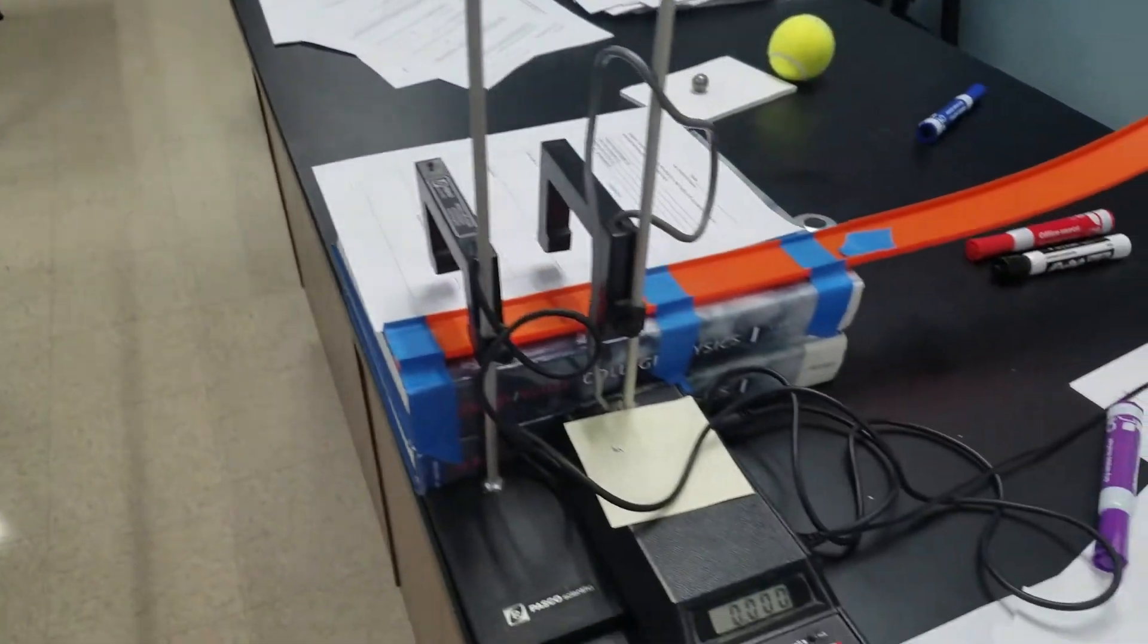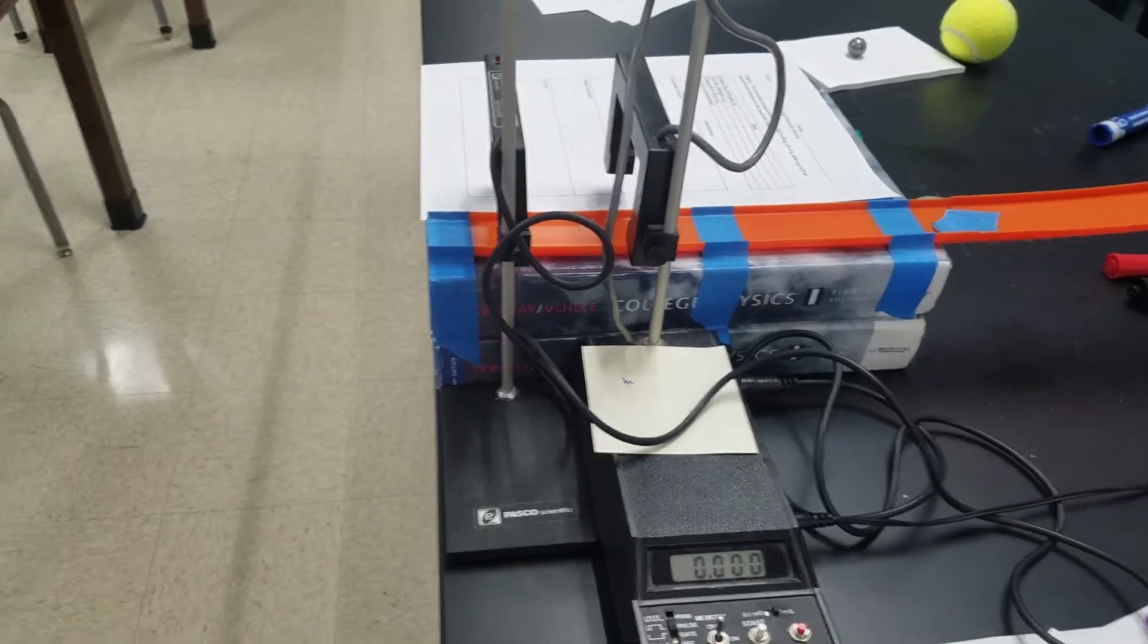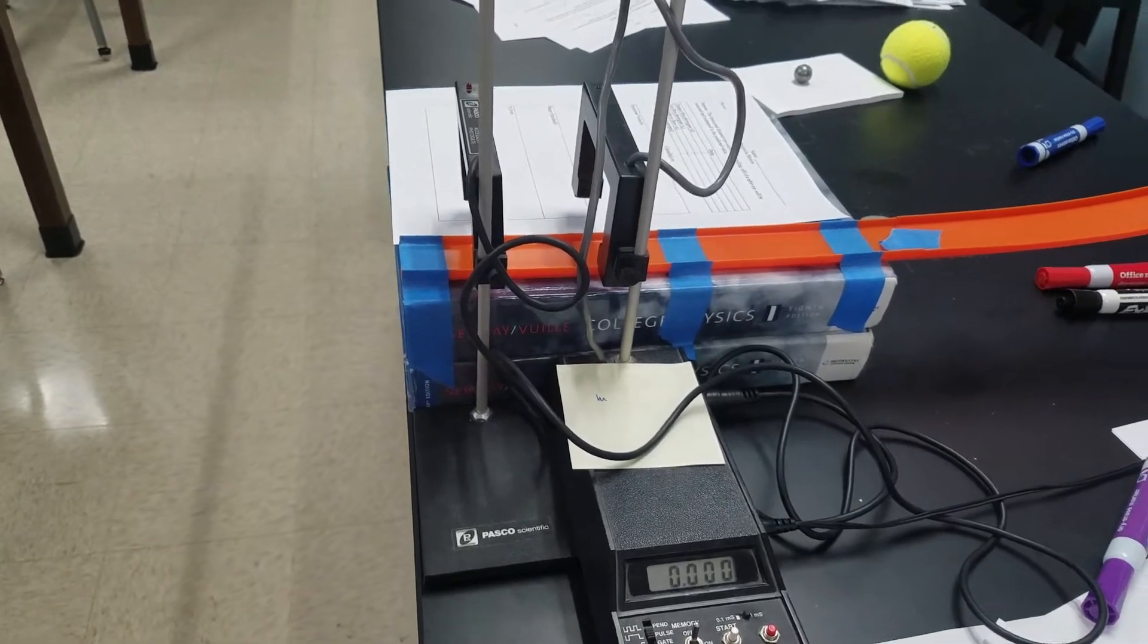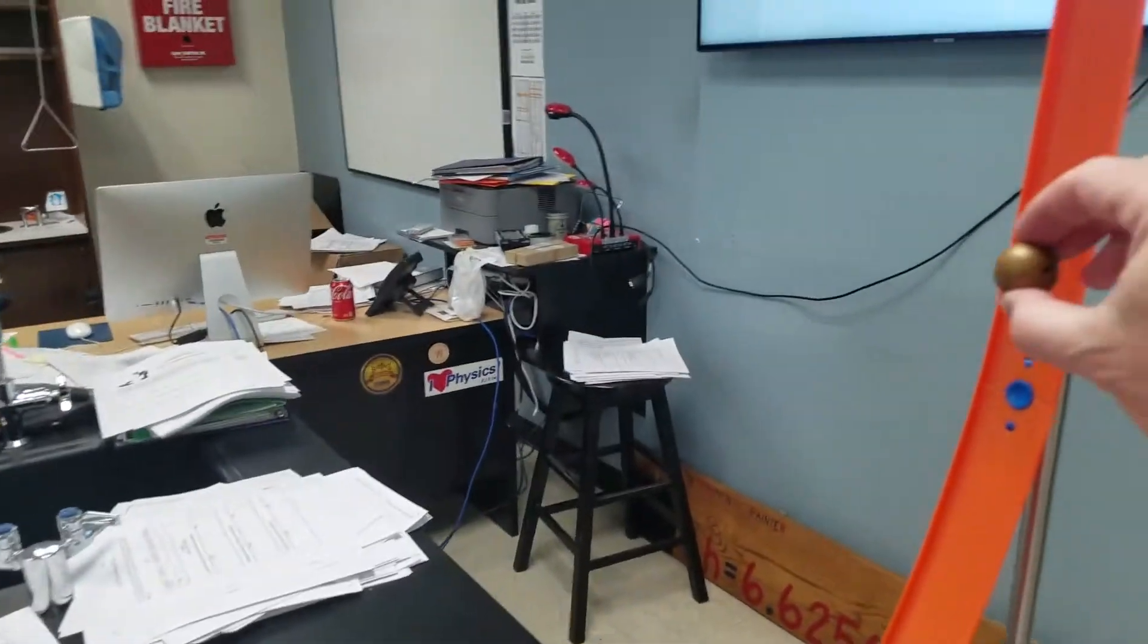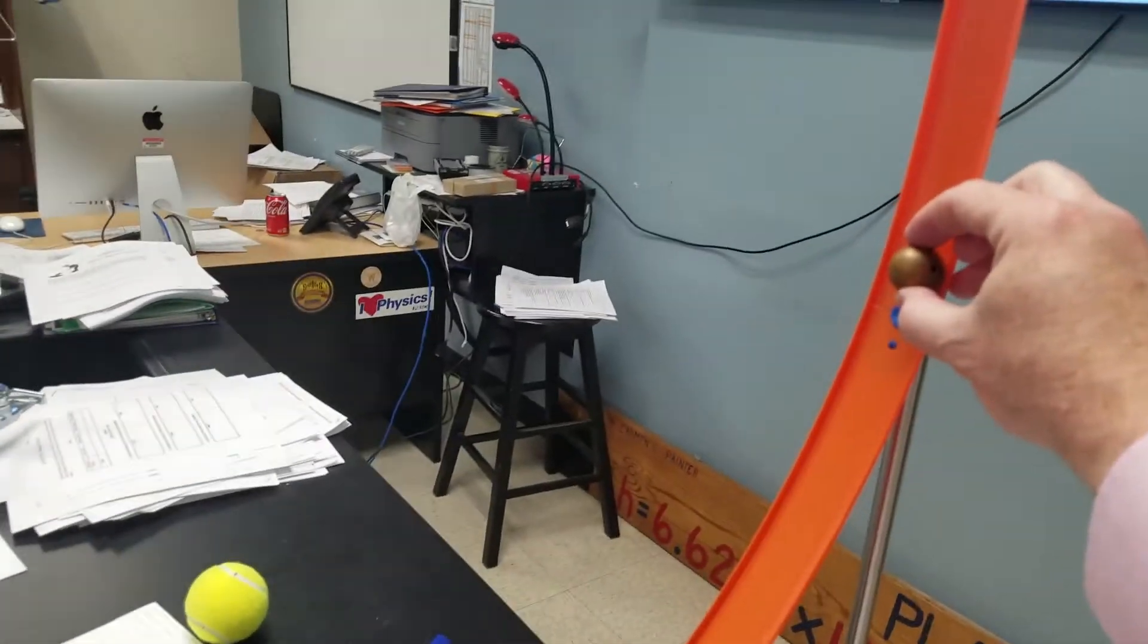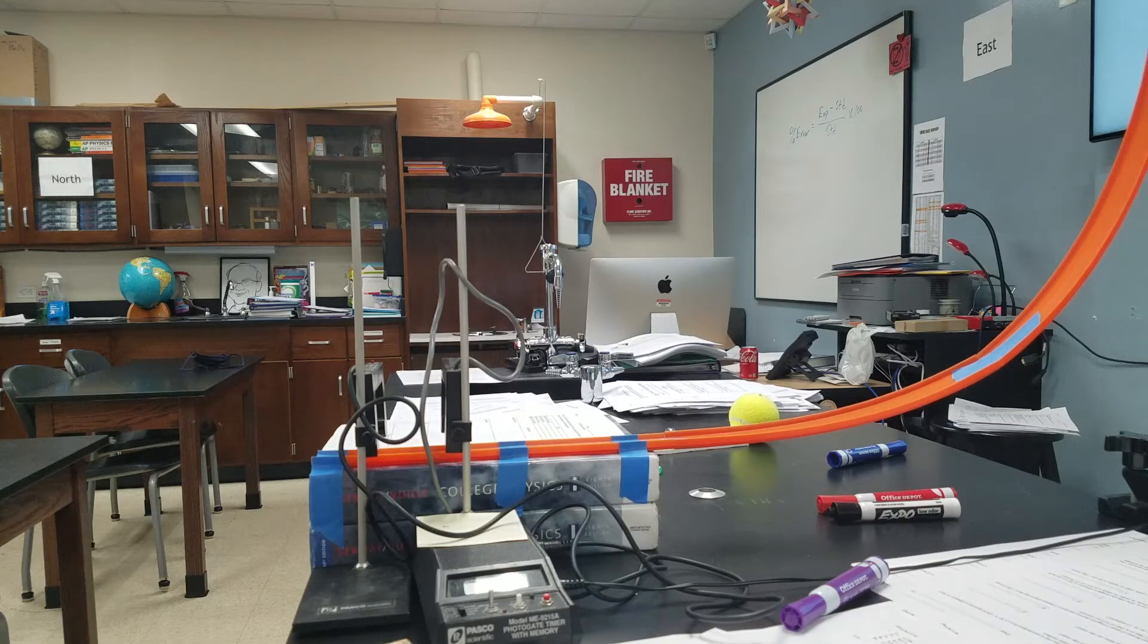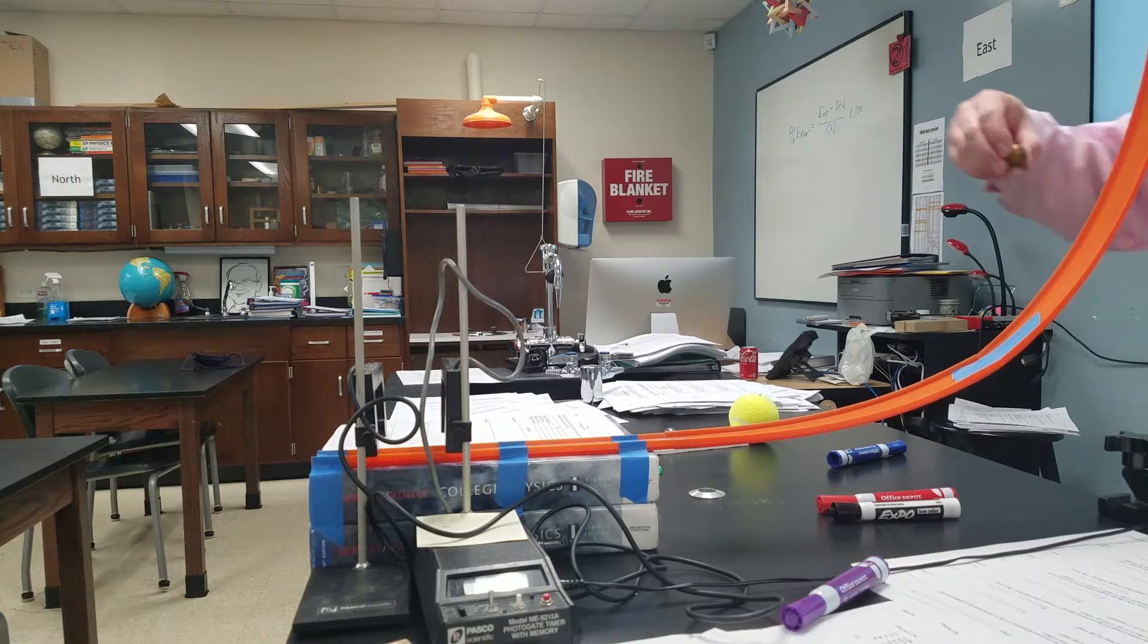So I'm first going to roll it down and see where it lands in general before I put the carbon paper down because I'm not really sure where it's going to land. I want to pick a spot right here and then roll it down. We get a time. Okay, I will release it and then it will go through the photo gate and then fall to the floor.